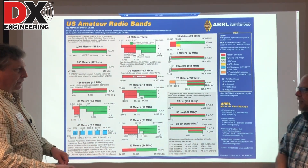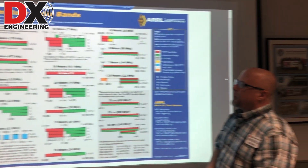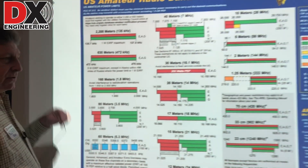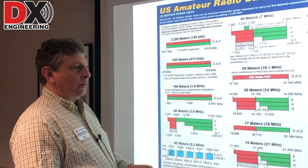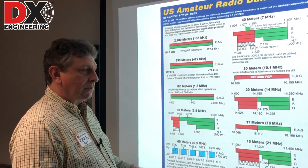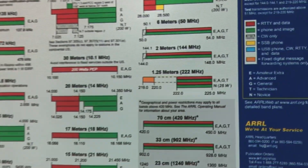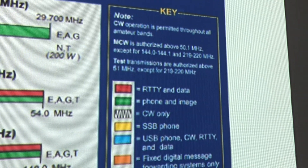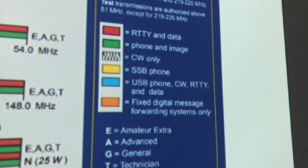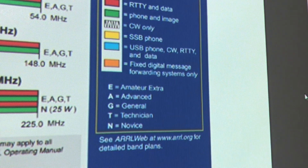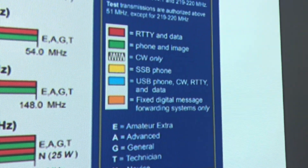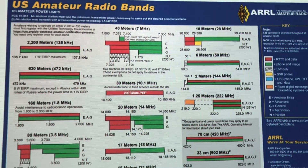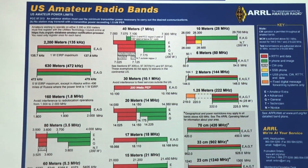What is the band plan, actually? In a nutshell, it tells us where we can operate and what modes. The FCC regulations dictate where you're allowed to transmit CW, phone, and other modes. It also shows what modes you're allowed to transmit, as well as where different license class operators are allowed to transmit. We'll also point out some of the gentleman's agreements about where people operate on certain modes.